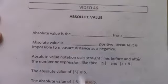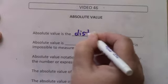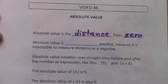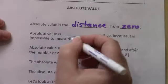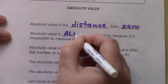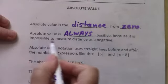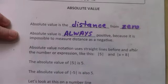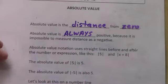Absolute value is the distance from zero. Absolute value is always positive because it is impossible to measure distance as a negative. That will make sense if you just think about that a little bit — any distance will have to be a positive number.